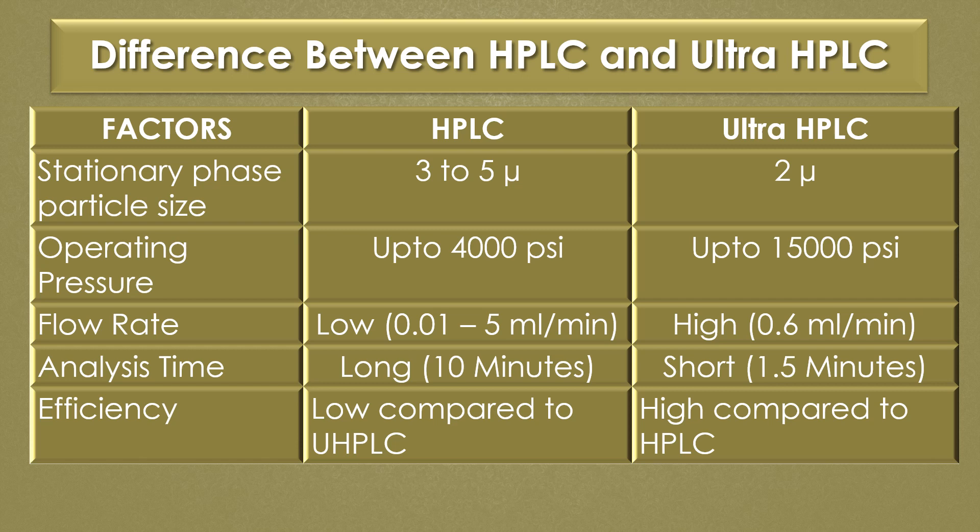The analysis time of HPLC is long, that is 10 minutes, but the analysis time of Ultra HPLC is short, with a duration of 1.5 minutes.